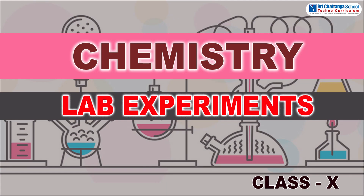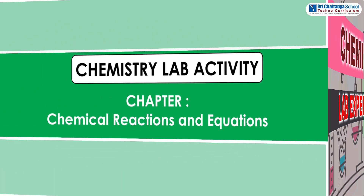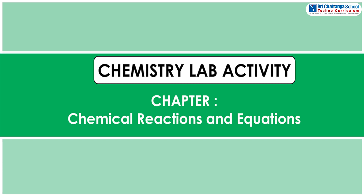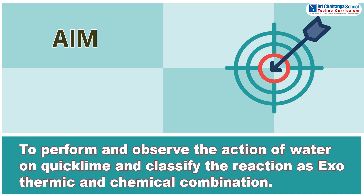Hi children, now it is time to do a chemistry lab experiment. This experiment belongs to 10th standard and the chapter name is chemical reactions and equations. The aim of this experiment is to perform and observe the action of water on quick lime and classify the reaction as exothermic and chemical combination.